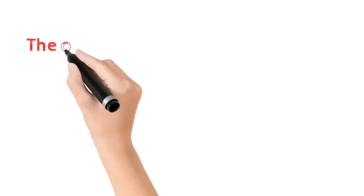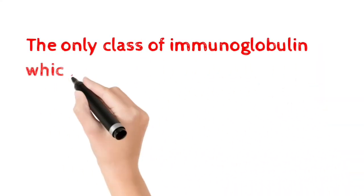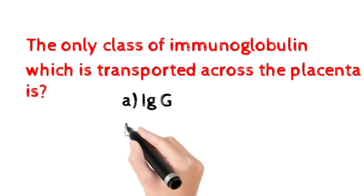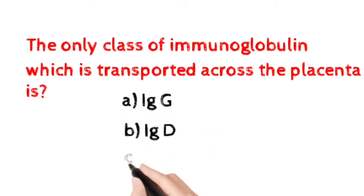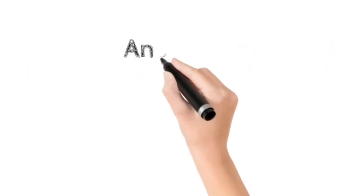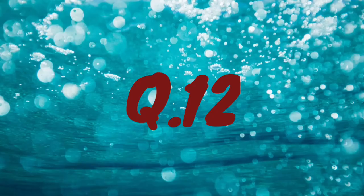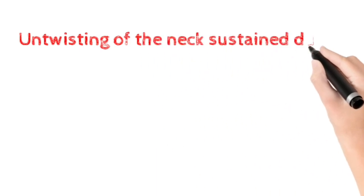Number eleven: The only class of immunoglobulin which is transported across a placenta is? Option A: IgG. Option B: IgT. Option C: IgE. Option D: IgM. Here the correct answer is option A, IgG.